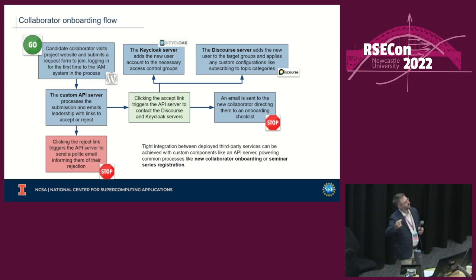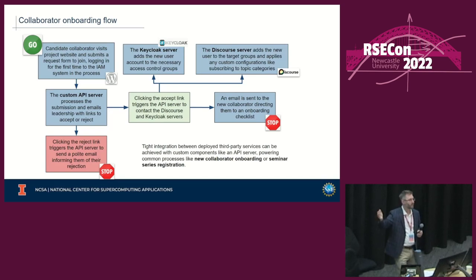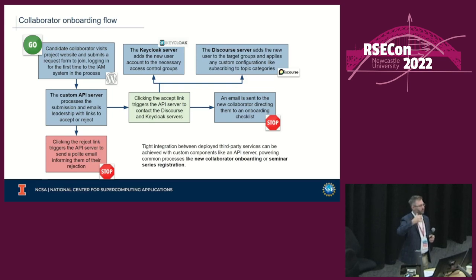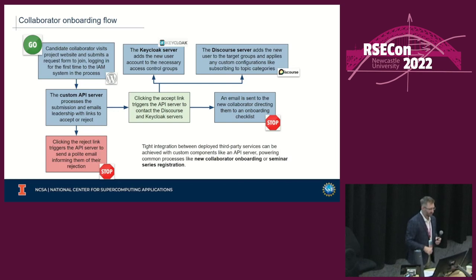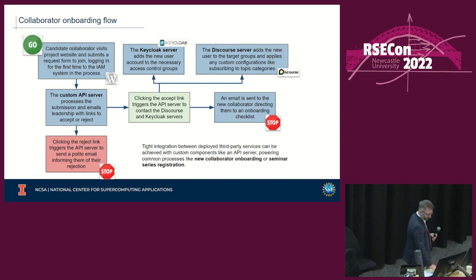That endpoint then talks to Keycloak and sets up and provisions their default groups for access control, then goes to the Discourse API and sets them up there. You can see how the custom API server executes all the logic and connects these otherwise disparate third-party applications — and that adds a lot of value. This is essentially reproducing something of a previous NCSA product called Comanage, which actually seems better in some ways.